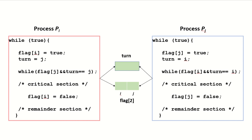Now let's look at the algorithm in detail. There is code for process PI and code for process PJ, and they share the integer variable turn and the boolean flag array. Process PI assigns a value of true at its index in the array — flag[i] equals true — showing that PI wishes to enter the critical section. If PJ also wants to enter, it assigns true at index j: flag[j] equals true.